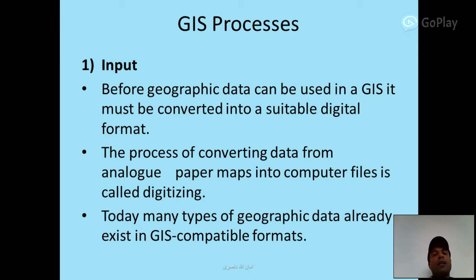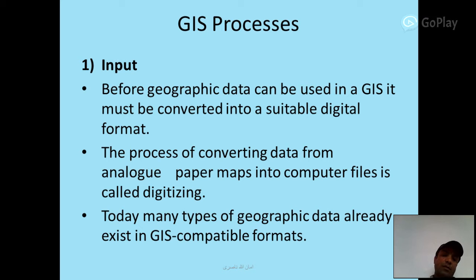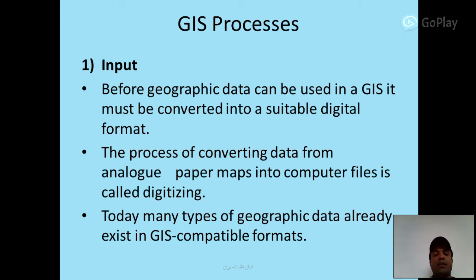Number one — Input: before geographic data can be used in GIS, it must be converted into a suitable digital format. The process of converting data from analog paper maps into computer files is called digitizing. Today, many types of geographic data already exist in GIS-compatible formats.